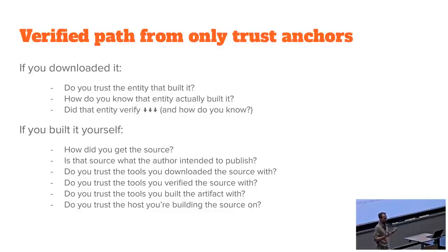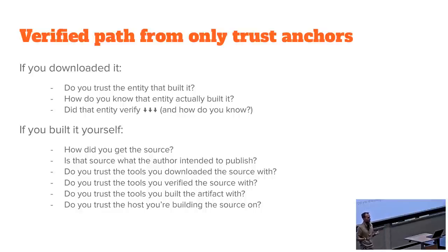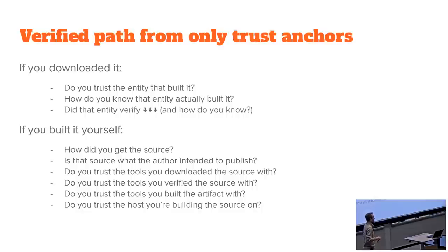Sometimes the assumption is: I trust the software that Anish writes, so if it came from Anish's private key, I'm fine deploying it — but anything I derive from that has to trace back to Anish's key. If you downloaded an artifact from the internet and deployed it, you need to ask: do you trust the entity that built it, and do you trust the entity you downloaded it from? If you download something from GitHub releases, GitHub didn't build it — some engineer built it. Do you trust that engineer, and do you trust that's the same person who authored the software? And even if the entity claims they verified everything, how do you actually know they went through those steps?